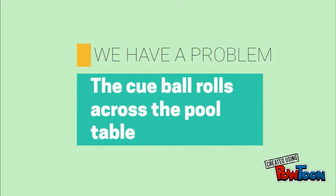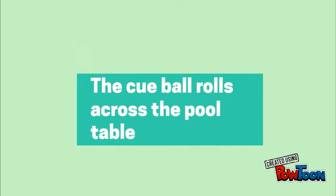The cue ball rolls across the pool table. Assuming the ball's speed is always constant, what is the rate of change of the ball at 5 seconds?